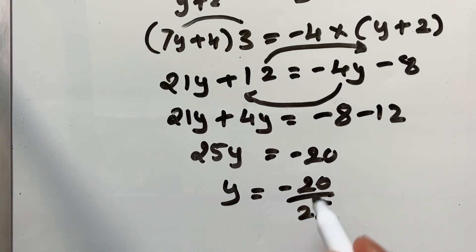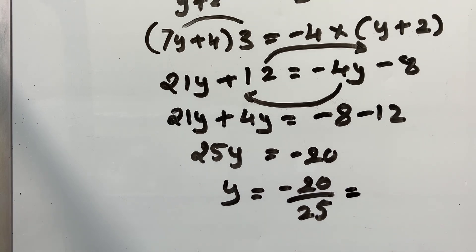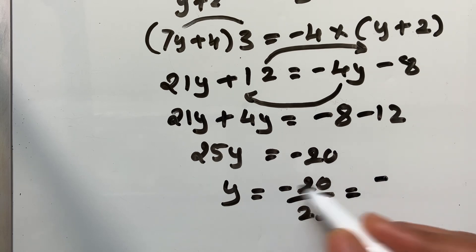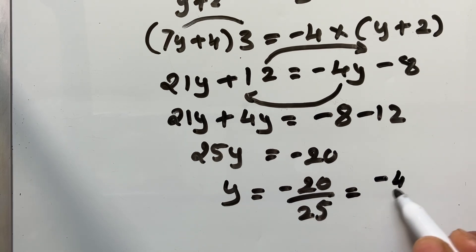Simplify this. Or keep in lowest form. Both 20 and 25 is divisible by 5. So, 20 divided by 5 is... Negative 20 divided by 5 is 4. 25 divided by 5 is 5. So, the answer is negative 4 over 5.